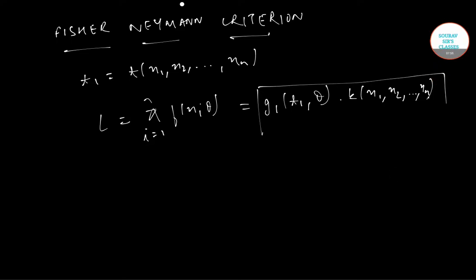So if you can express it in this form, then you get a sufficient statistic, where g1(t1, theta) is the PDF of the statistic t1, and k(x1, x2 up to xn) is the function of sample observations only independent of theta.